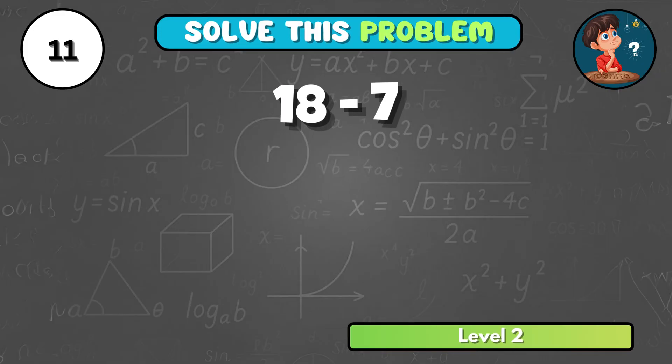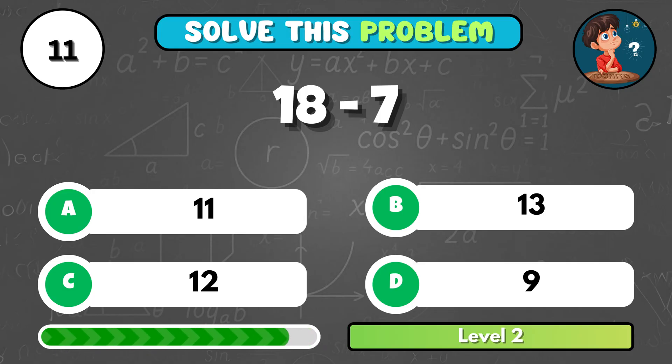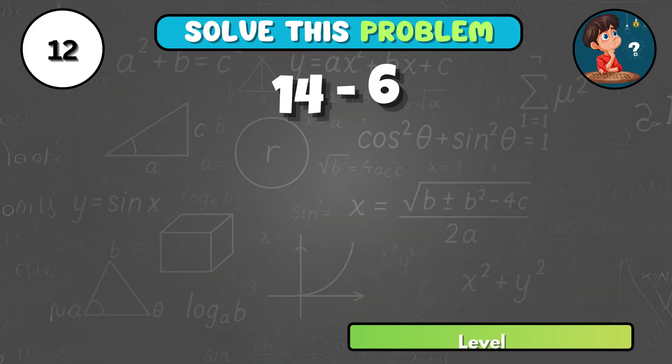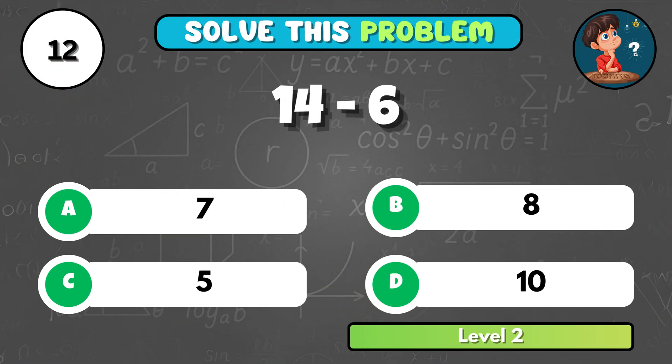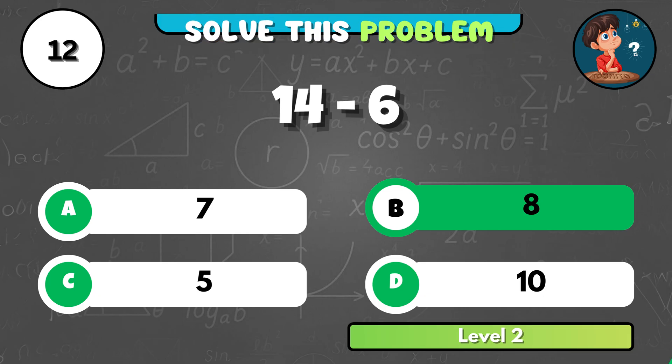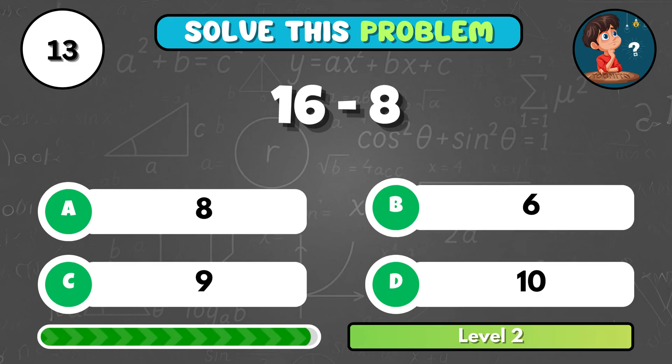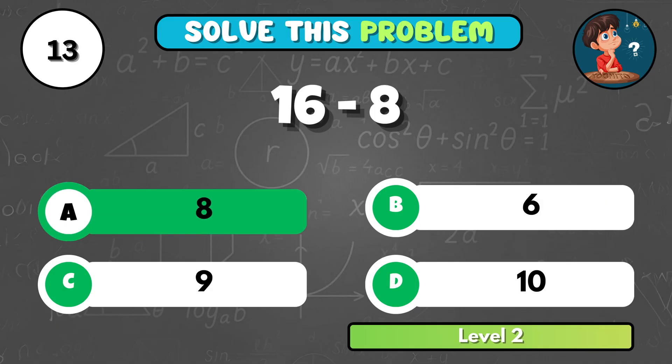Let's step it up! What is 18 minus 7? It comes to A, 11! Now tell me, what do you get when 14 minus 6? That's B, 8! Here's one for you! 16 minus 8 equals what? It's A, 8!